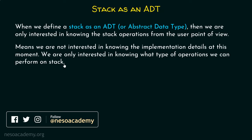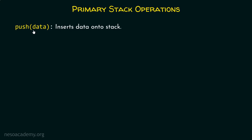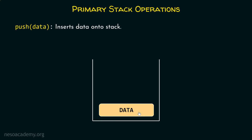We will look into some primary and secondary operations supported in case of stack. The first primary operation is push, which allows us to insert data onto the stack. Imagine a stack like a glass jar. This is the data I want to insert inside the stack, so I will simply use this push operation to insert this data inside the stack.